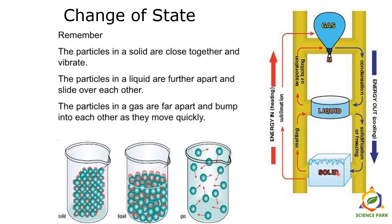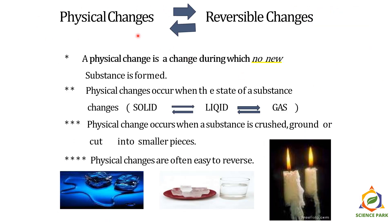A change of state — we know there are three states: solid, liquid, and gas. Particles in solids are very close together and vibrate slowly. Particles in liquids are further apart and slide over each other. Particles in a gas are far apart and bump into each other as they move quickly. But the nature of the particle remains the same. Physical changes are reversible: solid can be converted into liquid, liquid into gas, and again gas can be converted back into liquid and the same solid.